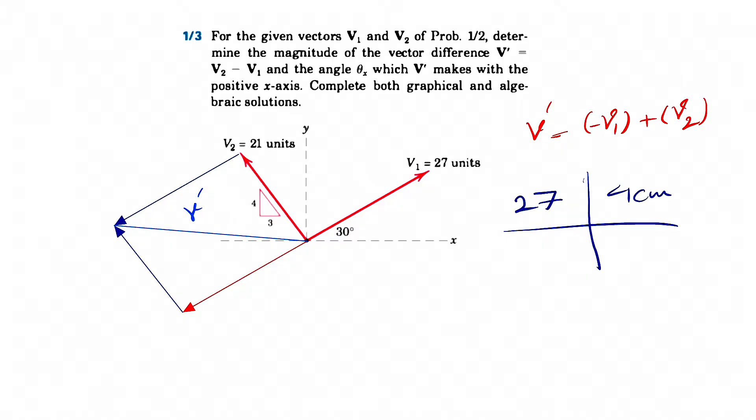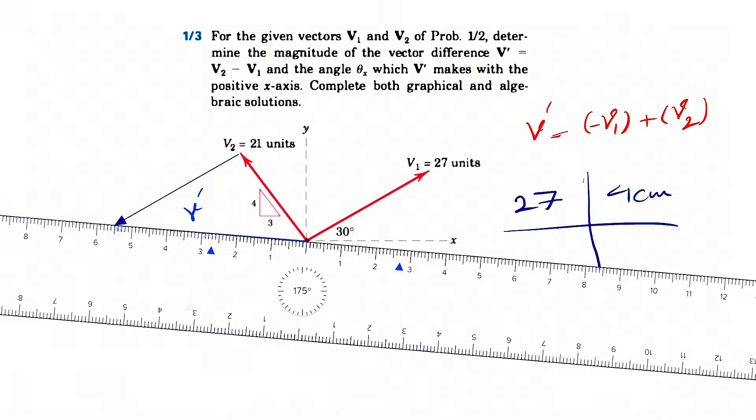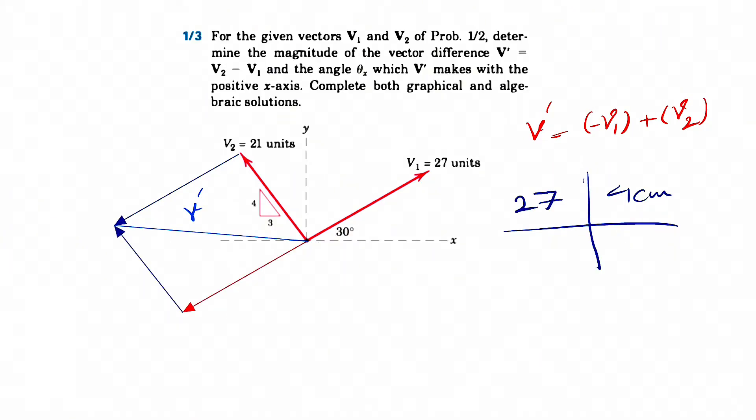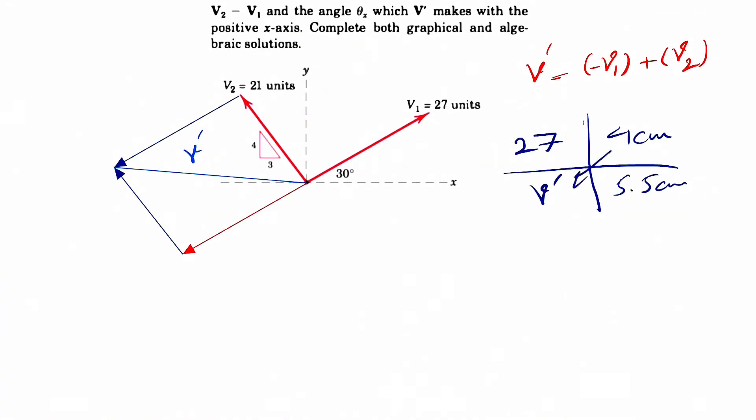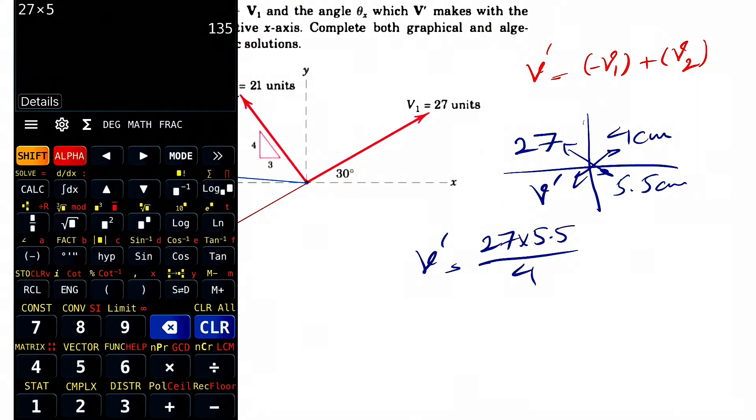And let's see what we have for the V prime. So the V prime is something like 5.5 centimeters. So from here, we can if you just cross multiply these, we can find V prime: 27 times 5.5 divided by 4. Let's see what we get.